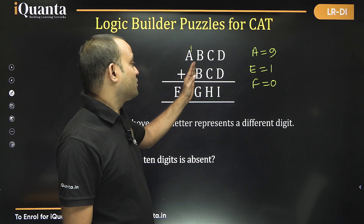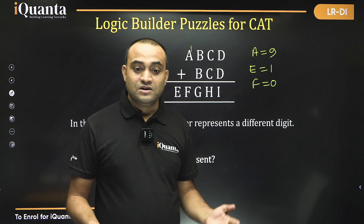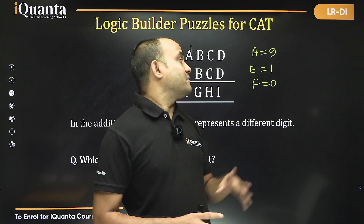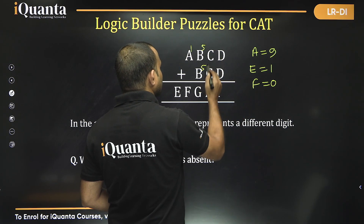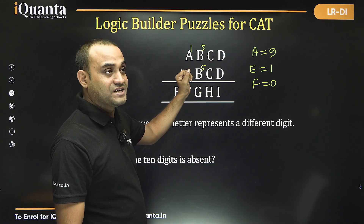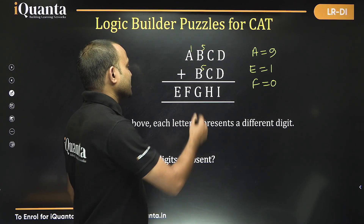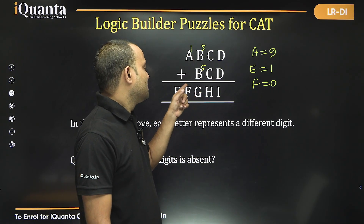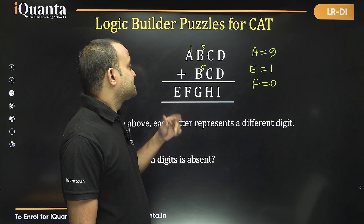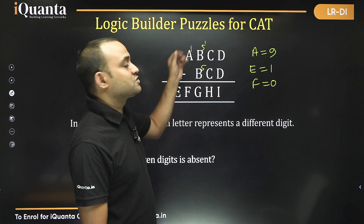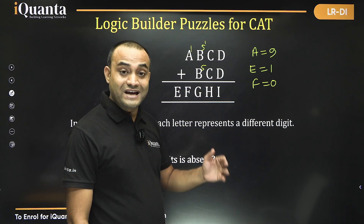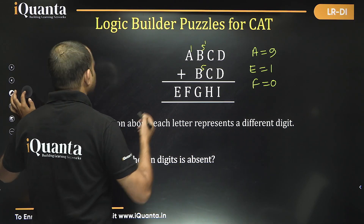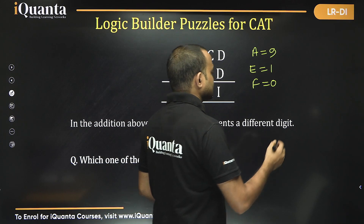Now we know there is a carry-forward from the previous sum B. The value of B must satisfy B plus B ≥ 10, so B must be at least 5. If B equals 5: with no carry-forward, 5+5=10 giving digit 0, but F is already 0 so G cannot be 0. With one carry-forward, 5+5+1=11 giving G=1, which is not possible since E is already 1. So B cannot be 5 and we must take B equal to 6.